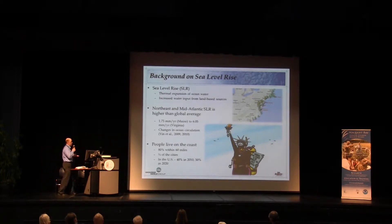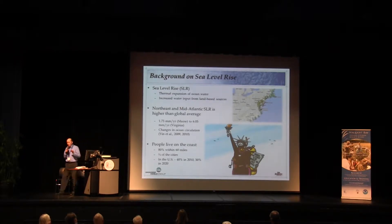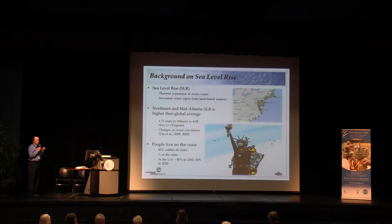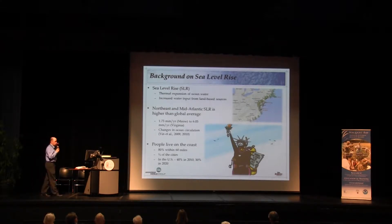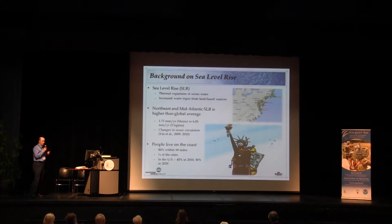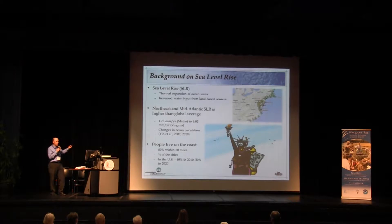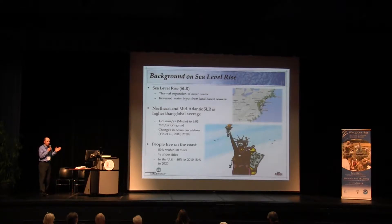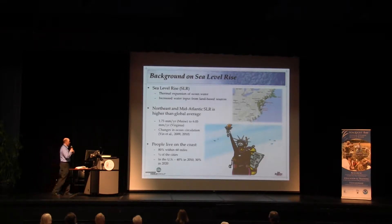Why is this important? Well, people live on the coast. In terms of the world, 80% of the population lives within 60 miles of the coast. Three quarters of the major cities in the globe are on the coastline, within about 60 miles. In the U.S., 40% of the population lives within 30 miles of the coastline, and by 2020 it's projected to be 50% of our population on the coast. And that's not because of sea level rise — that's because people are moving there. So it's going to be a problem. It's going to continue to become a problem.